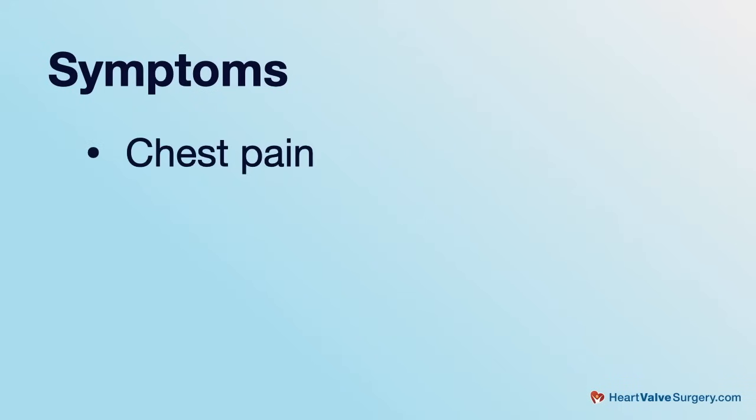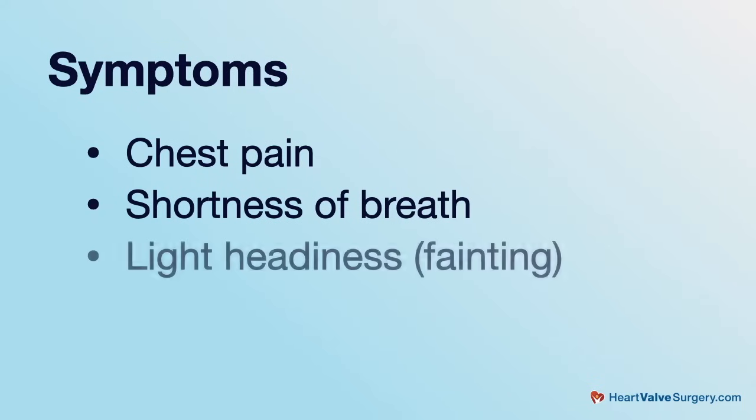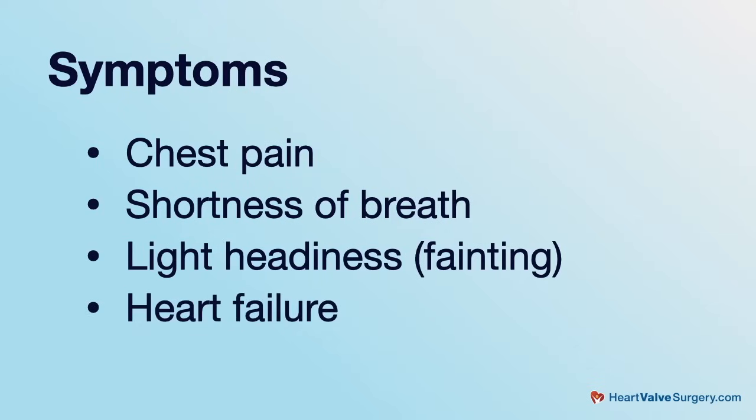Dr. Mehta, with 1% of the population potentially having a bicuspid aortic valve, what are the symptoms of this disease and what are its causes? Bicuspid aortic valve is a congenital condition, meaning you have it since the time you're born. The symptoms associated with aortic stenosis or aortic regurgitation are commonly chest pain, shortness of breath, lightheadedness, and fainting spells. In severe situations, both conditions can lead to heart failure, or an inadequate ability of the heart to pump blood forward effectively. Aortic aneurysms are commonly asymptomatic until the aneurysm gets really big, and then it can sometimes cause chest pain.